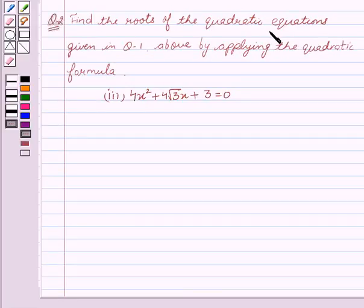Today we are going to find the roots of quadratic equations given in question 1 above by applying the quadratic formula. Our equation is 4x² + 4√3x + 3 = 0.